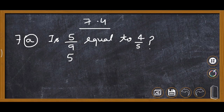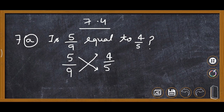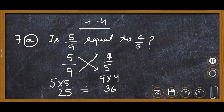Now doing Exercise 7.4, Question 7a: is 5 upon 9 equal to 4 upon 5 or not? We write 5 upon 9 and 4 upon 5, then cross multiply. 5 multiplied by 5 is 25, and 9 multiplied by 4 is 36. Both sides are not equal, so the answer is no — 5 upon 9 is not equal to 4 upon 5.